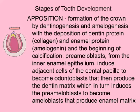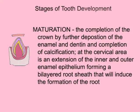In the appositional stage there is formation of the crown by dentinogenesis and amelogenesis, with the deposition of dentin protein or collagen and the enamel protein or amelogenin, and the beginning of calcification. Pre-ameloblasts from the inner enamel epithelium induce the adjacent cells of the dental papilla to become odontoblasts that produce a dentin matrix, which in turn induces the pre-ameloblasts to become ameloblasts that produce the enamel matrix. In the maturation stage there is completion of the crown with further deposition of enamel and dentin and completion of their calcification.